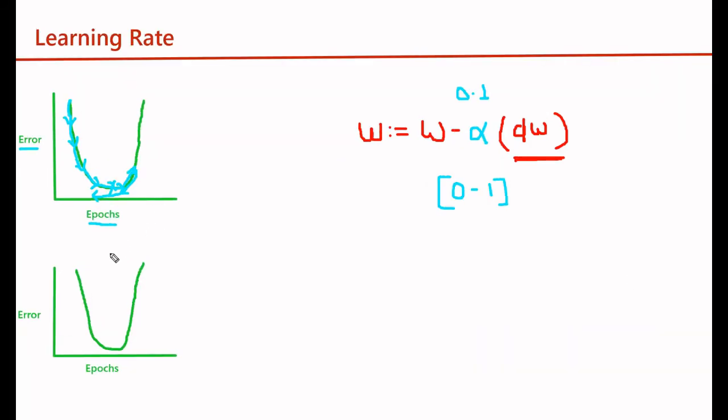On the other hand, if we are taking a learning rate very small, then we will reach our convergence point but it will take considerable time because only a small amount from the derivative, slope, or gradient we are considering.